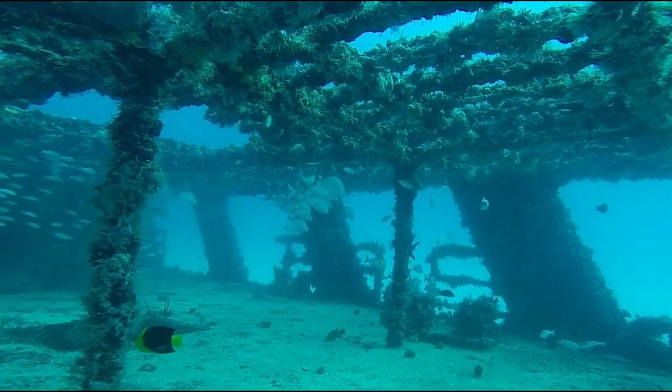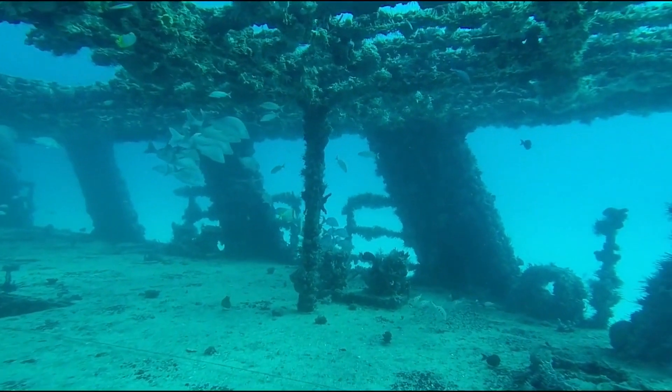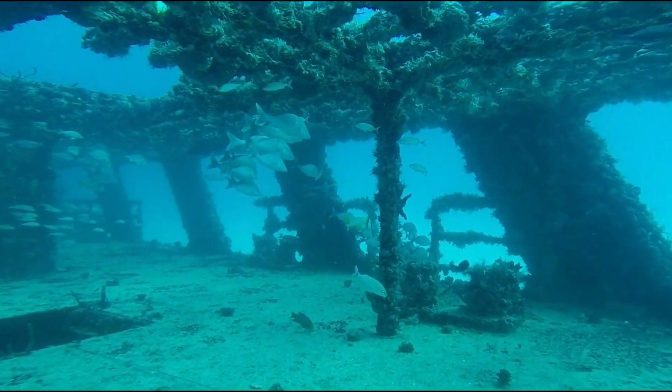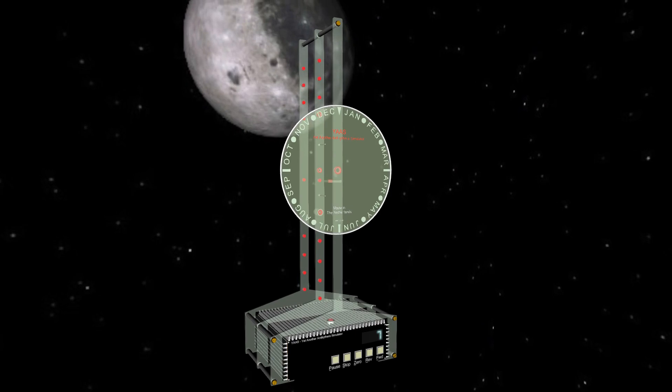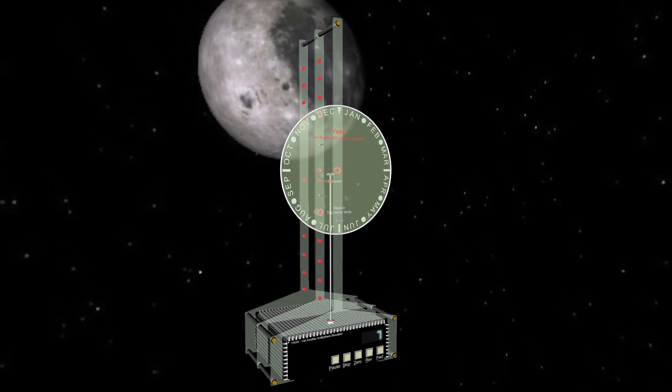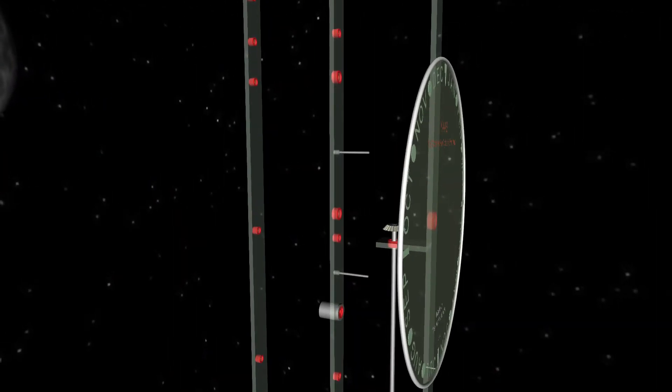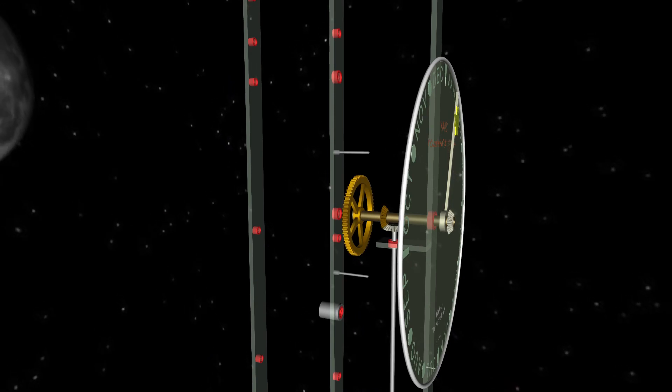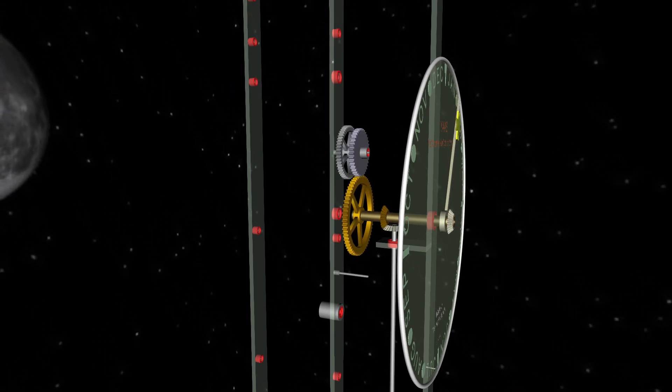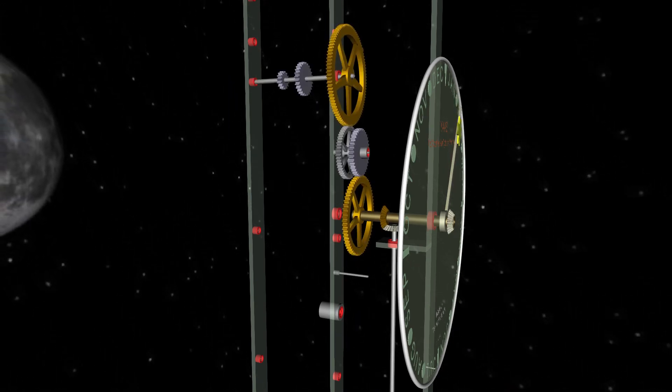The Antikythera mechanism was a single piece when it was recovered from the Mediterranean, but it soon broke into three major parts. A hand crank was used to operate the Antikythera mechanism. The hand crank was linked to the largest gear via a crown gear.